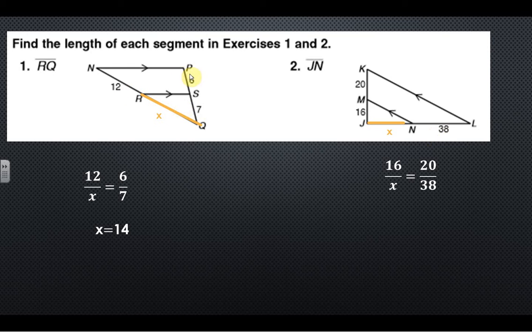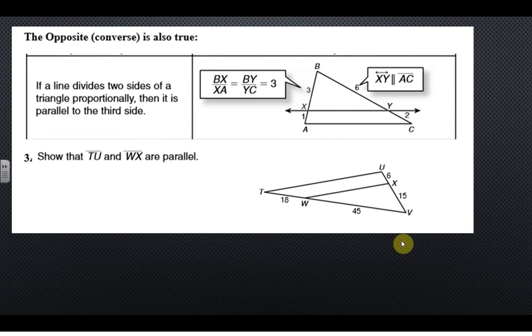But basically you can do the parts that are across from each other, so 16 over x, 20 over 38. So here I went this way with my proportion, here I went across. They're both correct and you get 30.4 in that case. So that's the basics.